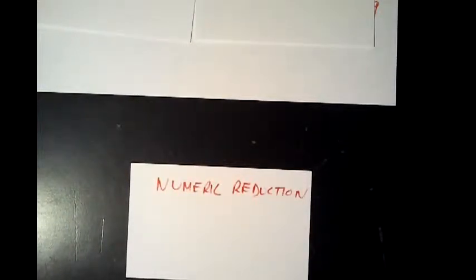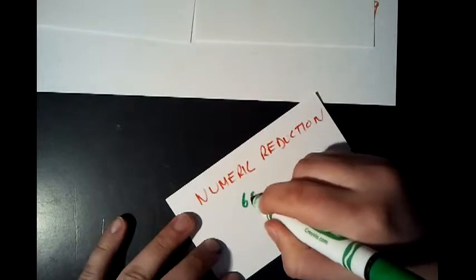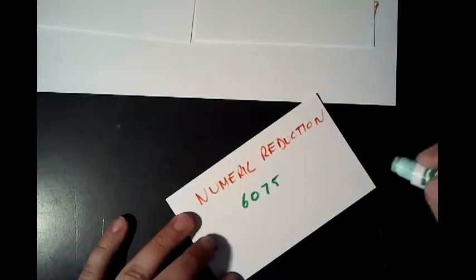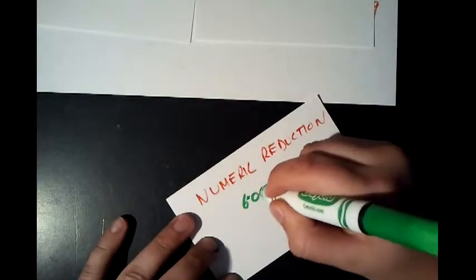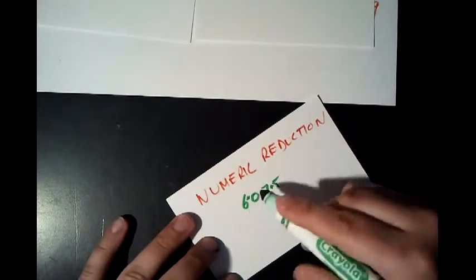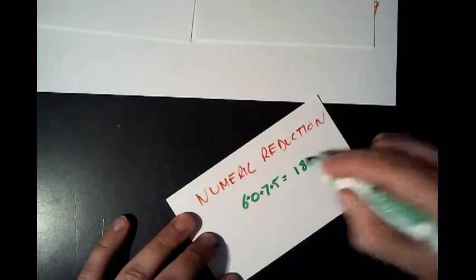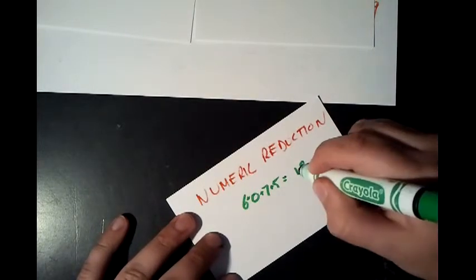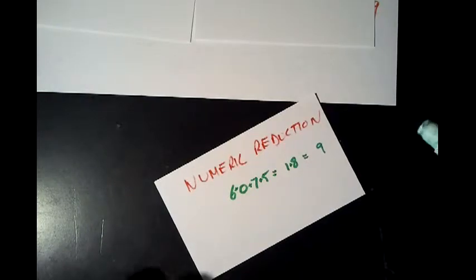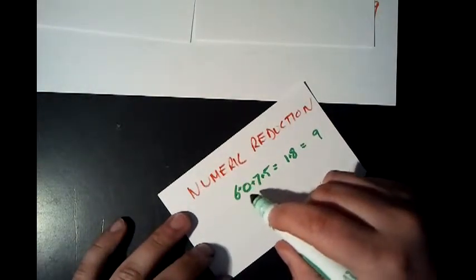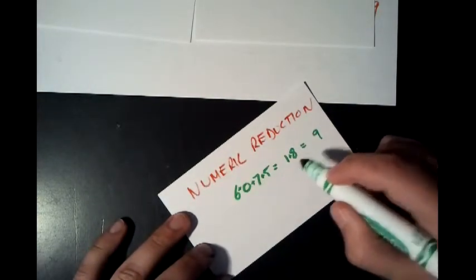What is numeric reduction? Numeric reduction is a process we might have even done as children without thinking about it. Let's take a number — 6075. We add up all the digits, so 6 + 0 + 7 + 5 gives us 13, and then 1 + 3 + 5 is 18. We keep doing that until we get a one-digit number, so 1 + 8 gives us 9. The numeric reduction of 6075 is 9.